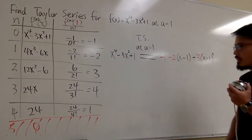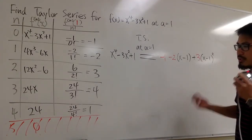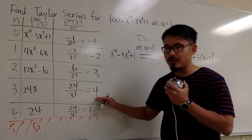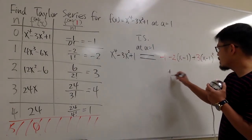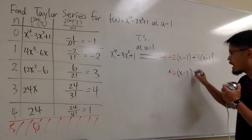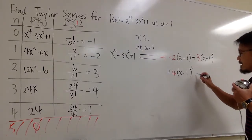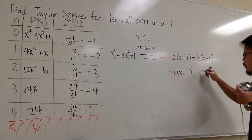And then we pretty much just keep constructing the Taylor series. The next one is the 4. We add 4. Let me just put it down right here. And then we multiply by x minus 1 to the 3rd power.